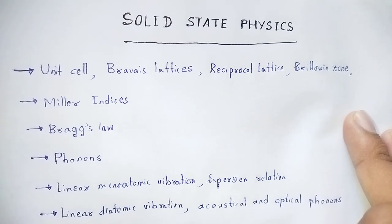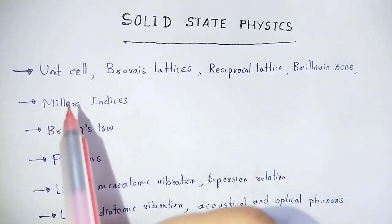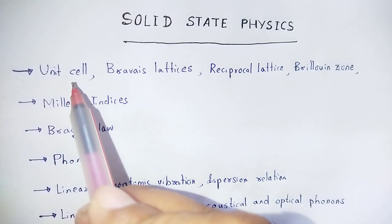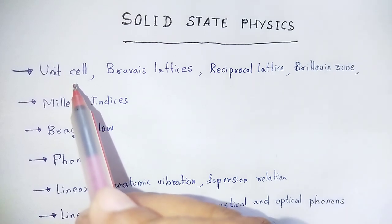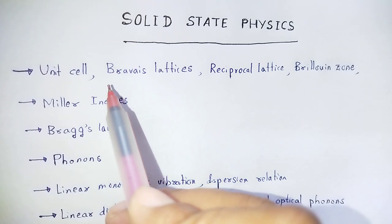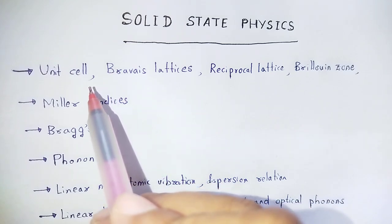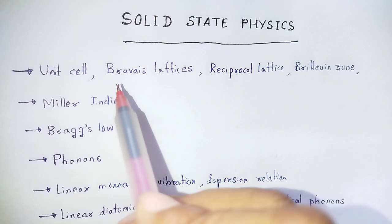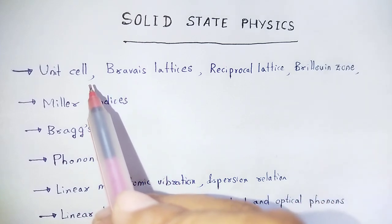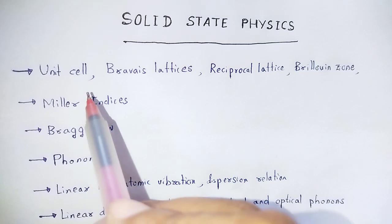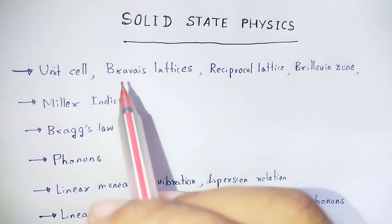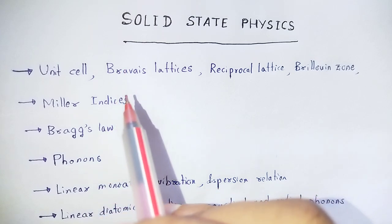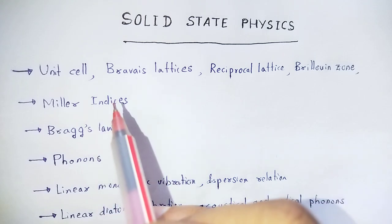First: unit cell. What is a unit cell in crystallography? Crystal structure discussion. Lattice plus basis is equal to crystal structure. Lattice is an infinite array of points in space. Basis is a group of ions, molecules, or atoms attached to lattice points. Together they give the total crystal structure.